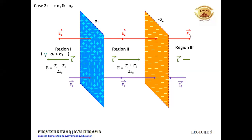Similar is the case in region 3. In region 3, E1 is acting in a direction to the right of the orange colored negatively charged sheet and E2 is towards this negatively charged sheet. The net electric field will be in the direction of E1 because sigma 1 is greater than sigma 2, and the net electric field will be the difference of E1 and E2, that is (sigma 1 minus sigma 2) upon 2 epsilon naught.